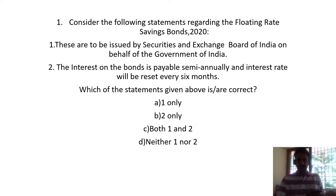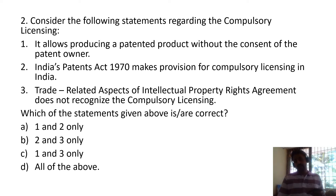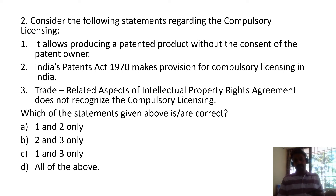Let us go to the next question. Consider the following statements regarding compulsory licensing. Statement 1 - it allows producing a patent product without the consent of the patent owner. Statement 2 - India's Patents Act 1970 makes provision for compulsory licensing in India. Statement 3 - Trade Related Aspects of Intellectual Property Rights agreement does not recognize compulsory licensing.